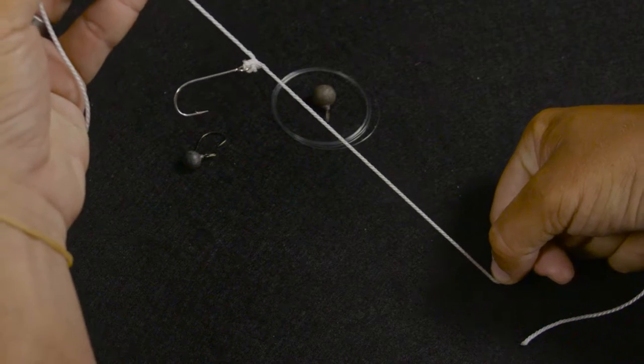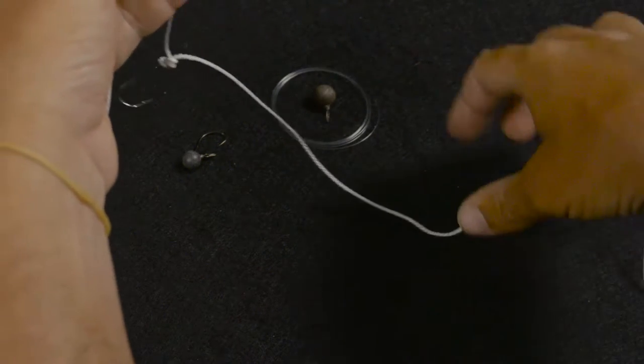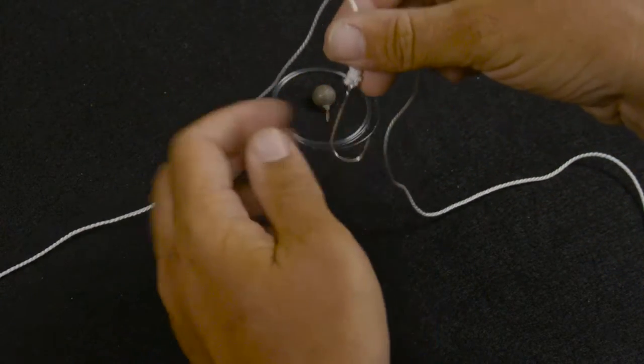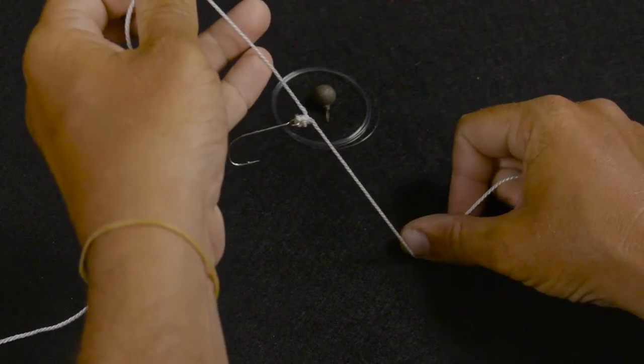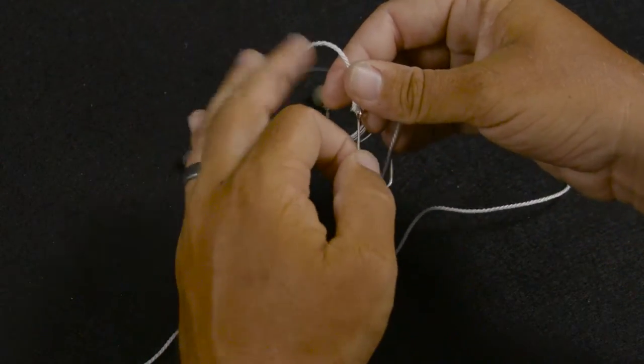As you can see right there the hook's pointing down, so when you rig a worm on that it's just not going to work. You're not going to hook the fish and you need that hook to be pointing upward. So here's what you do to solve that problem. Super easy.